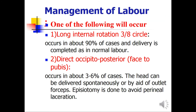Management of labor: one of the following will occur. Either long internal rotation of three-eighths of a circle, occurring in approximately 90 percent of cases, and delivery is completed as normal labor; or direct occipital posterior — face to pubis — occurring in three to six percent of cases, where the head can be delivered spontaneously or with outlet forceps, and an episiotomy is performed to avoid perineal laceration.